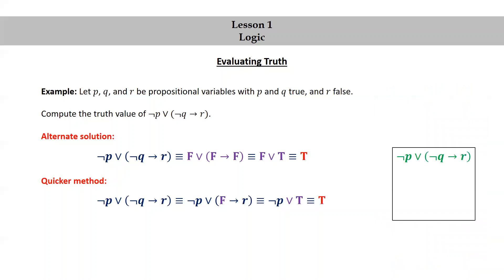Finally, let's look at a visual approach. Since q is given to be true, we simply write a T under the q. Since the negation of T is F, we put an F under the negation symbol. Since F implies r is T, we put a T under the implication symbol. And since not p or T is T, we finally put a T under the disjunction symbol, giving us our result.